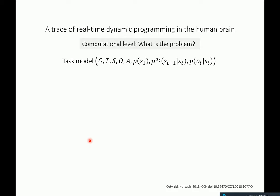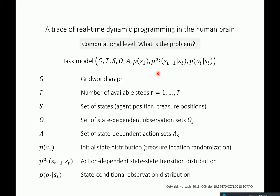From a computational cognitive neuroscience perspective, the first thing we always do is specify the computational level — the problem — using a task model based on partially observable Markov decision processes. We specify sets capturing the structural components of the task and probability distributions capturing the dynamic aspects. This includes a set of task states — agent position, participant position, the grid, and treasure positions — and state-dependent actions. Crucially, we specify how agents transition between states based on actions, and how observation bars arise from the current state via the likelihood function.